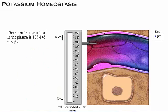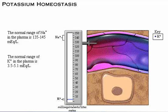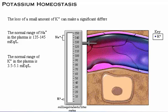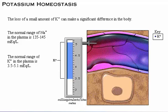The normal range of sodium in the plasma is 135 to 145 milliequivalents per liter. Compare this to the normal range of potassium in the plasma, which is 3.5 to 5.1 milliequivalents per liter. Because potassium has a much smaller range, the loss of a small amount of potassium can make a significant difference in the body.